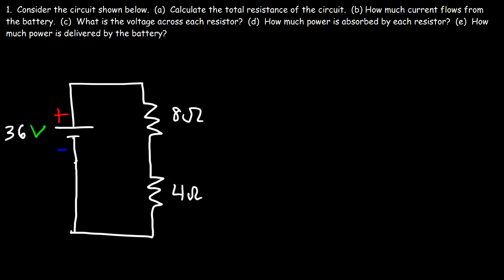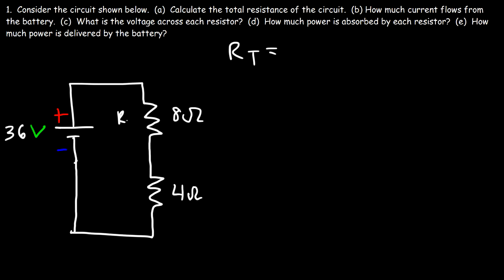We have a circuit where the resistors are connected in series. The reason they're connected in series is because there's only one path for the current to flow, so the current that flows through each resistor is the same. In a series circuit, the total resistance is the sum of R1 and R2, so it's 4 plus 8, which is 12 ohms.